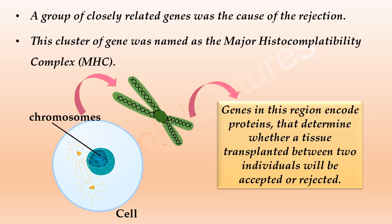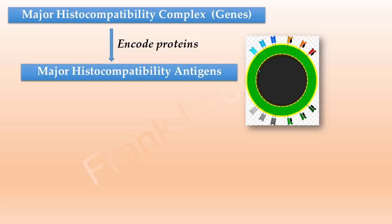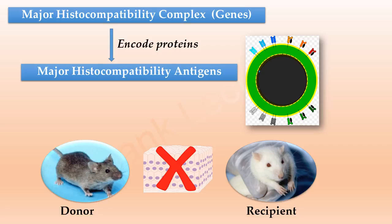It was discovered that these genes encode proteins which act as self-antigens on the surface of the cells. These proteins are known as major histocompatibility antigens. These antigens give the answer to why rejection of the transplanted tissue happened.